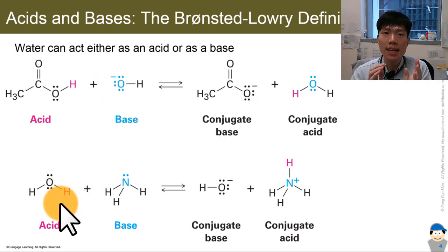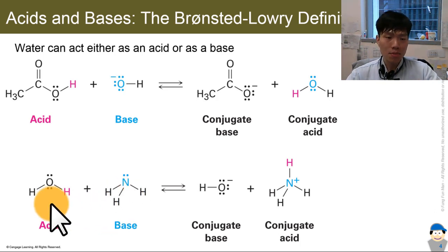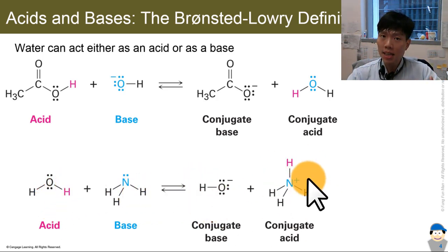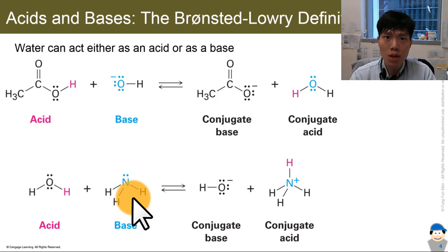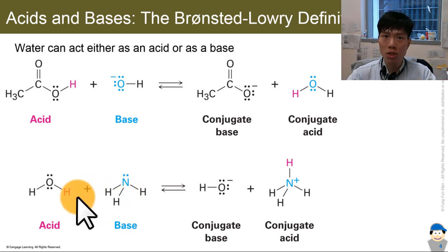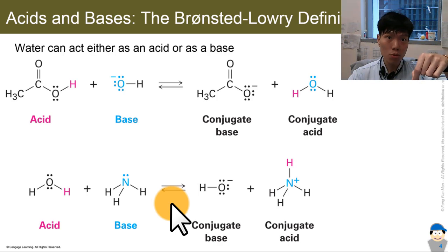Water, being neutral, can behave as both the acid or the base depending on the situation. In the presence of a more basic substance like ammonia, which is mildly basic, water behaves as the acid. The proton is transferred to ammonia, and water becomes the conjugate base. You get ammonium ion, which is the conjugate acid of ammonia. This is exactly why ammonia gives a pH above 7 at room temperature in water — dissolving ammonia produces hydroxide ions, which is why a litmus paper dipped in ammonia solution turns blue.